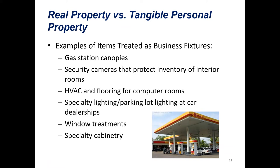Here's a list of examples of items commonly treated as business fixtures. Remember, the primary test is whether it primarily benefits the business conducted on the premises. These things have been determined to primarily benefit the business rather than the realty: gas station canopies, security cameras that protect inventory of interior rooms, HVAC and flooring for computer rooms, special lighting, parking lot lighting at car dealerships, window treatments, and specialty cabinetry.